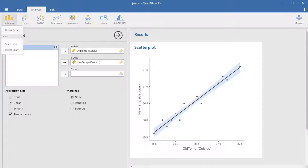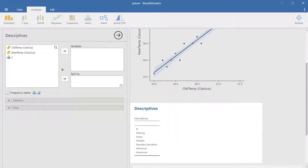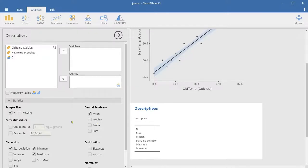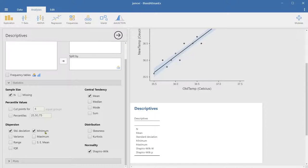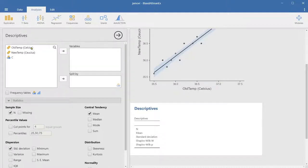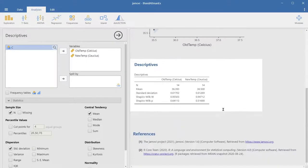But before we do that, let's actually run the descriptive statistics to see the mean. The mean measurement for the old temperature is 36.4 and new temperature the mean is 36.5, so there's quite a small difference, 0.1 difference. The normality is okay because the p-value for Shapiro-Wilk test is greater than alpha 0.05.